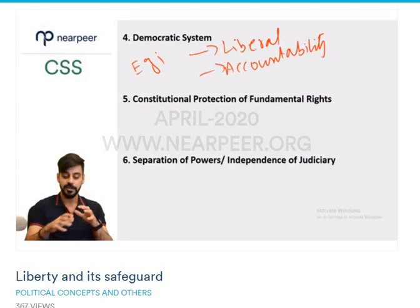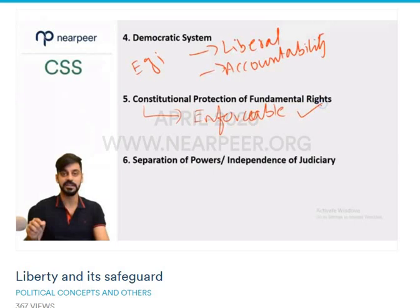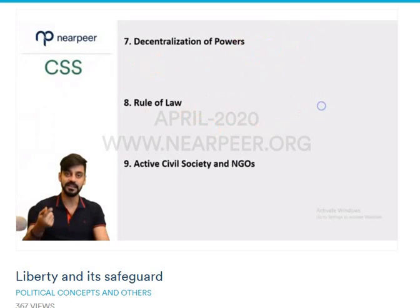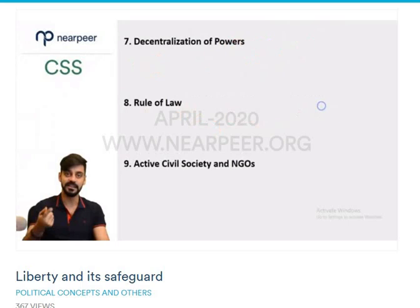The fifth safeguard is the constitutional protection of fundamental rights. This is very important in the protection of liberty because constitutional provisions are enforceable in courts. The provisions that a constitution enshrines — if the state or any other party violates them, the aggrieved party can take the accusers to court and force them to uphold constitutional rights. If fundamental rights are constitutionally protected, the benefit is that they have legal enforceability behind them.